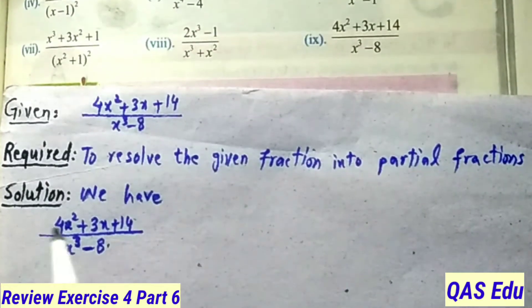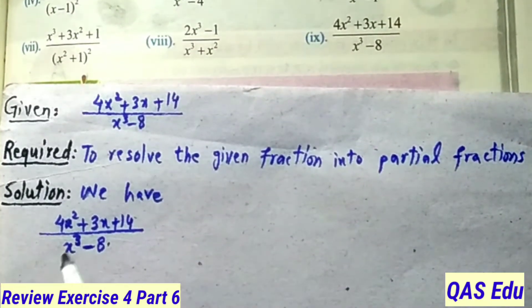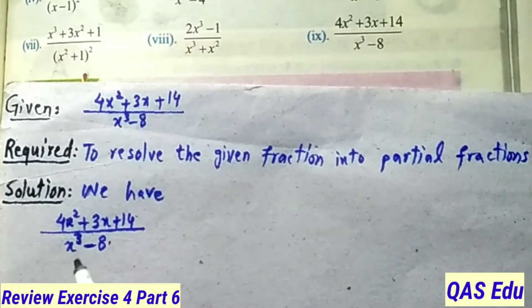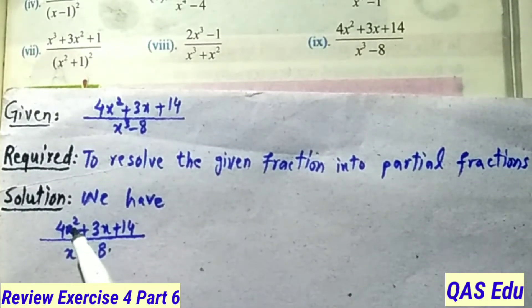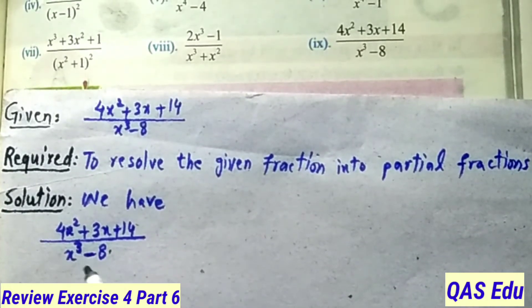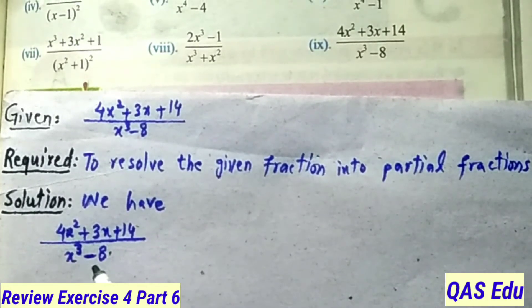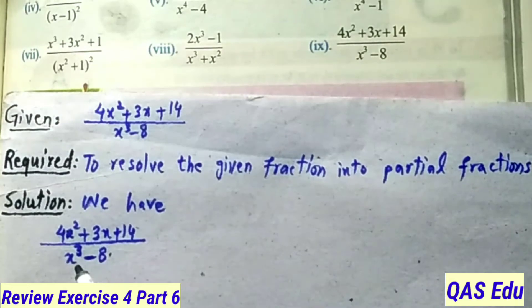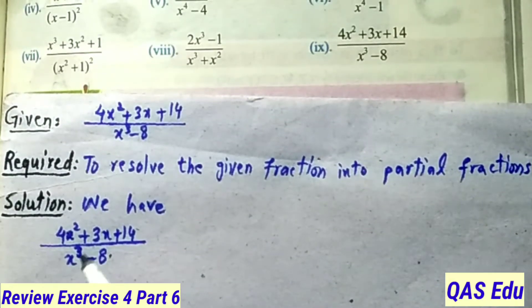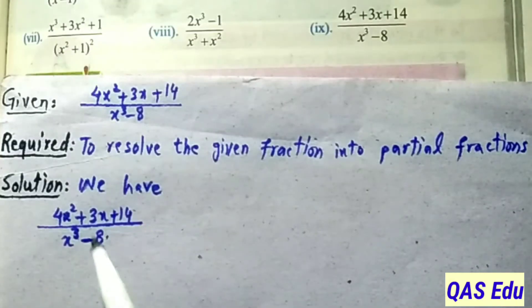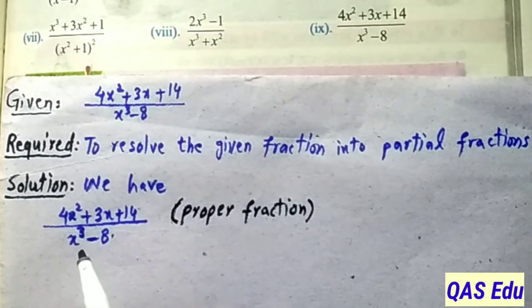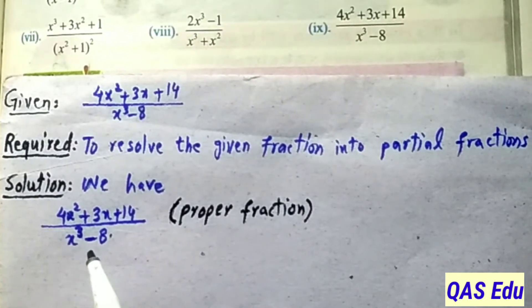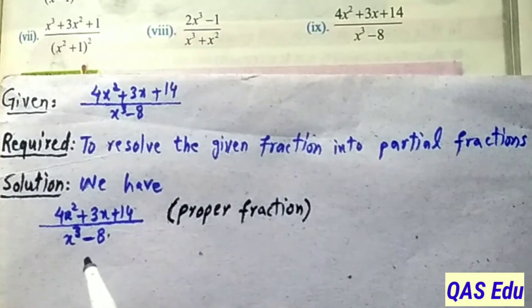Solution: first we check the given fraction. The numerator polynomial degree is 2 and the denominator polynomial degree is 3. Since the numerator degree is less than the denominator degree, this is a proper fraction. Now we need to factorize the denominator.